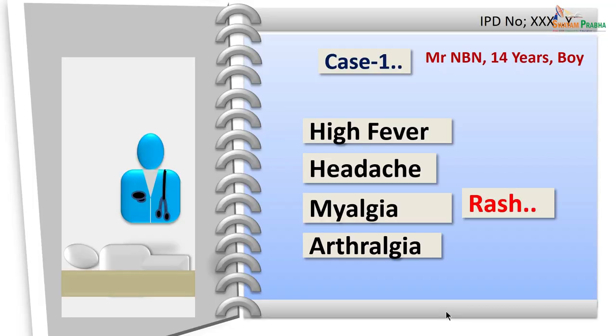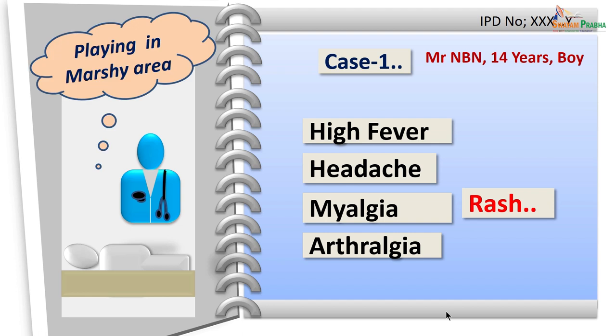This was a boy about 14 years old who came with high fever, headache, myalgia, severe arthralgia and a very typical rash. This boy also gave the history that he was playing around in a marshy area and vaguely remembers that he might have been bitten by a few insects, which he really cannot recollect the morphology and other details.